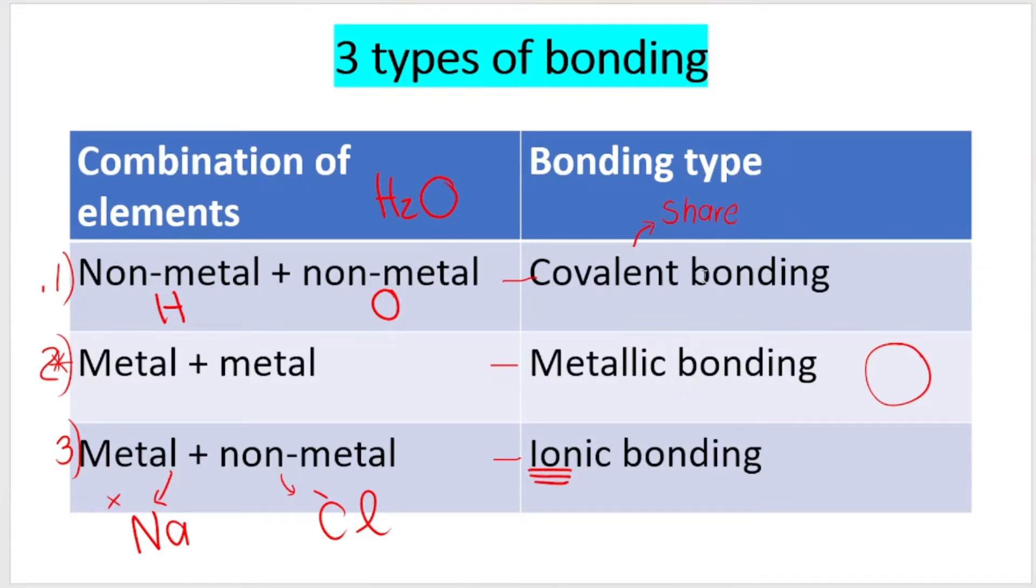We've got covalent bonding, which is the sharing of electrons between two atoms to form a molecule, between a non-metal atom and a non-metal atom. For example, hydrogen and oxygen to give you water. Ionic bonding is a transfer of electrons from a metal to a non-metal. So metal plus non-metal is ionic, non-metal plus non-metal is covalent. If you need more information about these types of bonding, please click the links above or below in the description.